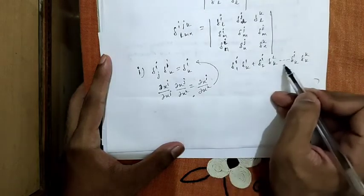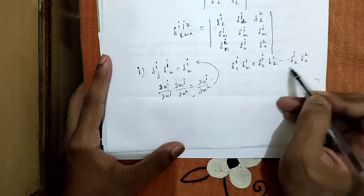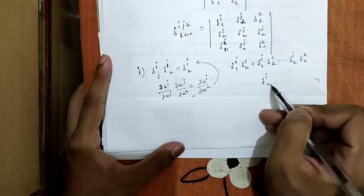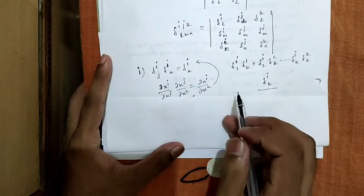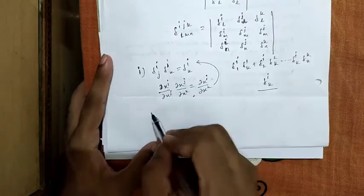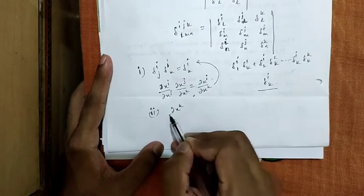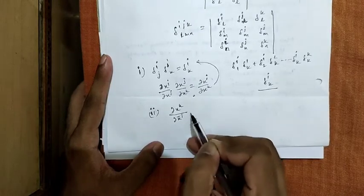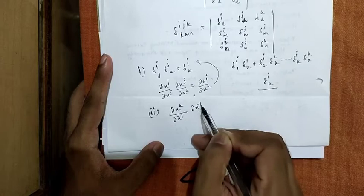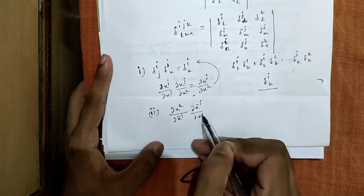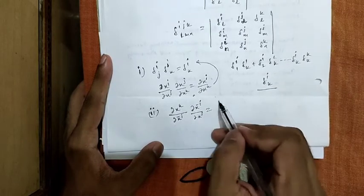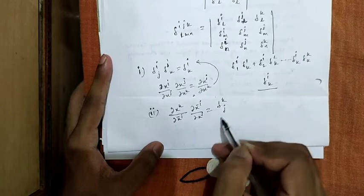So all the indices will become 0 and single one left which is equal to del_ik. Now move to the second question: curl x_k over curl x_bar i, curl x_bar i over curl x_j, which is nothing but equals to del_kj.